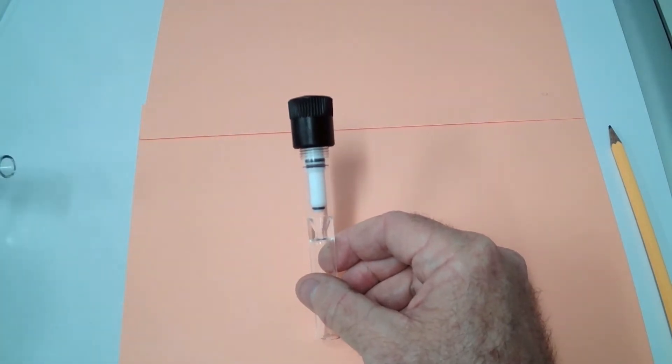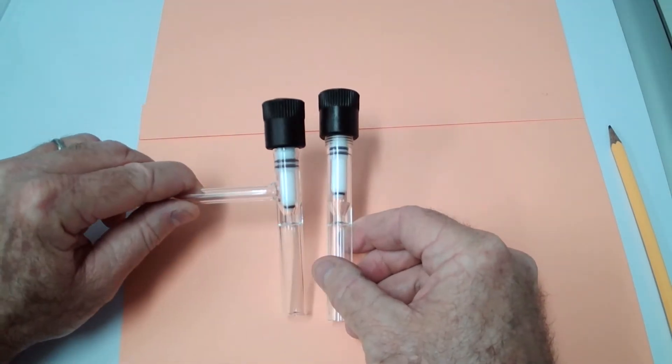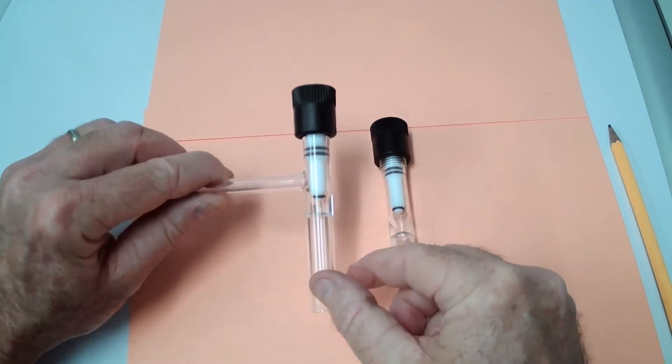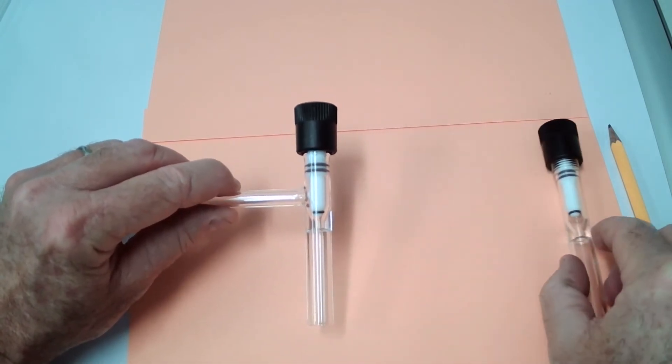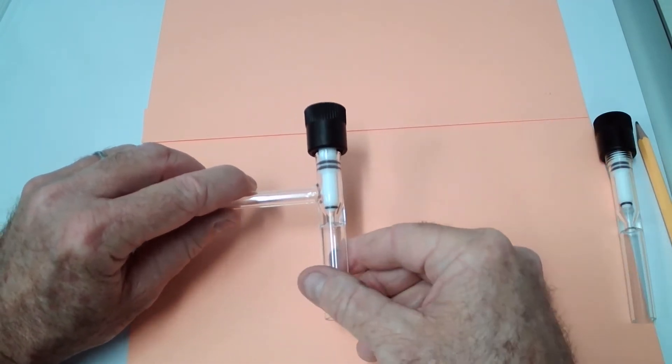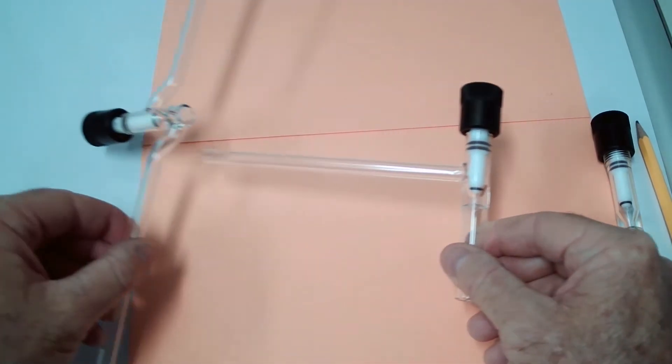They seal arms onto the valves for use in the laboratory, and there are different orientations that they use.